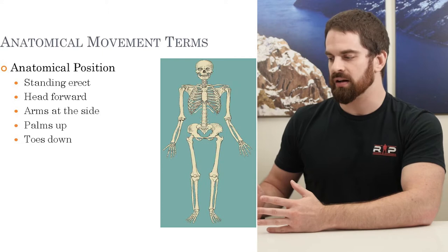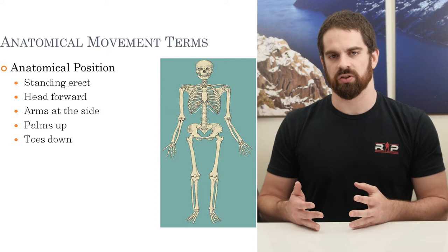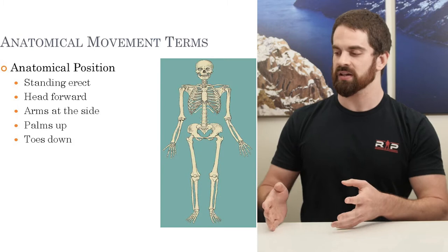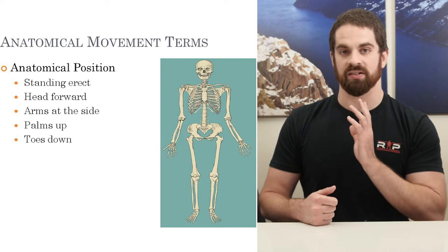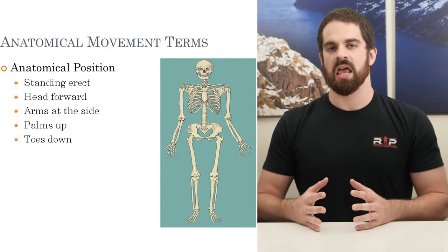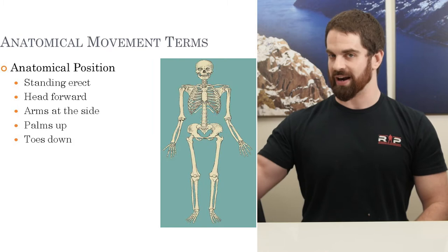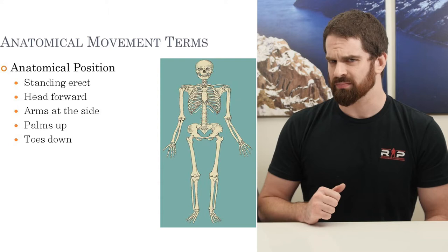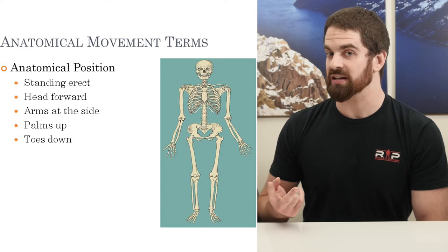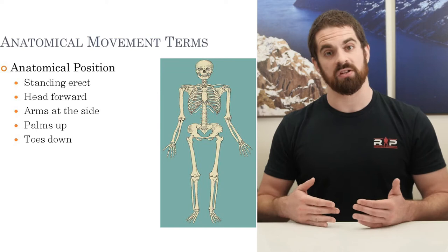When talking about anatomical positions, it's usually done from the first-person perspective. So if you're looking at a figure, you might say that's his left arm, but more correctly it would be from that person's perspective — what is their right arm versus their left. It's a flip-flop — put yourself in their shoes. This is the reference point we'll use to describe directional and movement terms going forward.